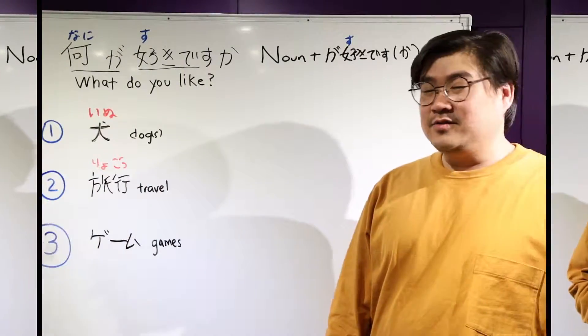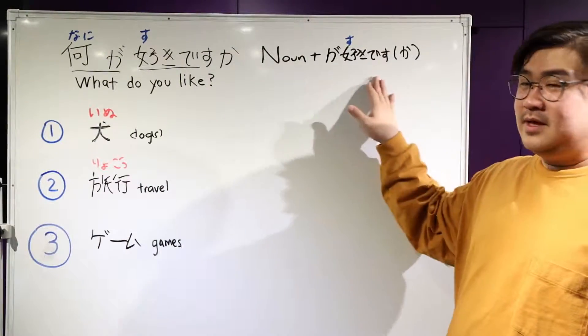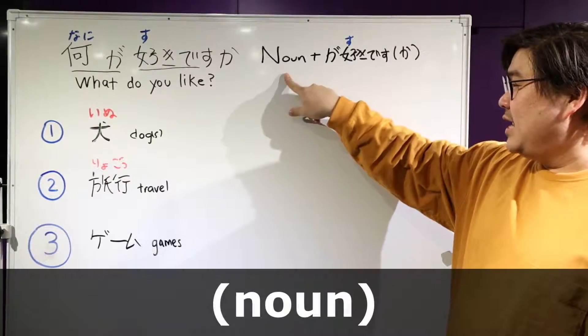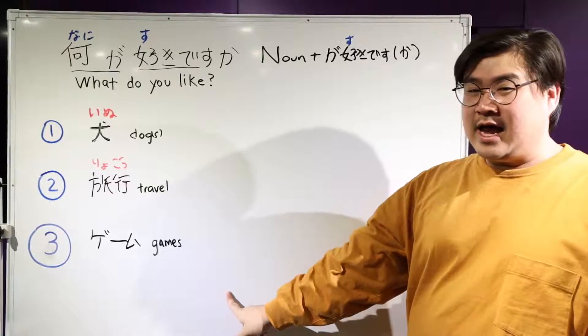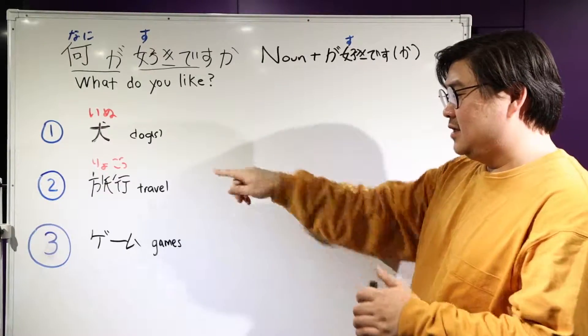Let's get started. So I just pointed to you the formula of how to say I like something. Noun plus ga suki desu. And then you'll see we have three nouns right here: dogs, travel, and games. Just simple nouns here.